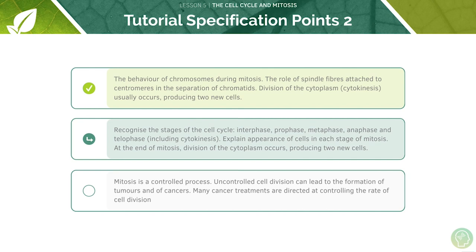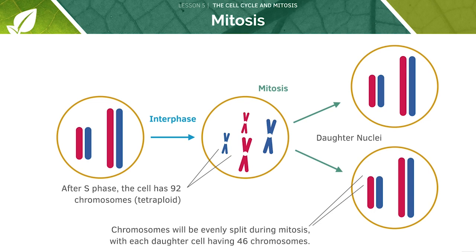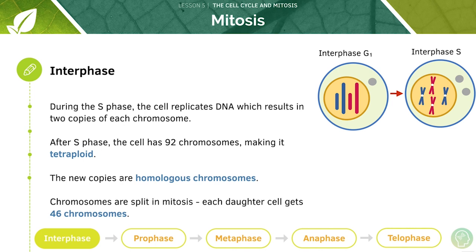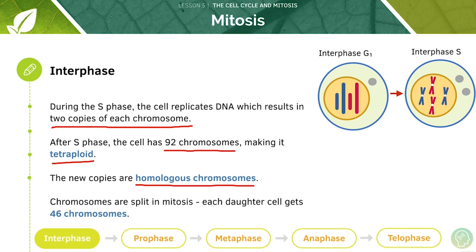Now we will cover the stages of the cell cycle. After interphase, the eukaryotic cell divides in mitosis to produce two daughter cells, each with identical copies of DNA produced by the parent cell during DNA replication. During S phase the cell replicates the DNA, resulting in two copies of each chromosome. After S phase the cell will have 92 chromosomes, making it tetraploid. The new copies are called homologous chromosomes. The chromosomes then split in mitosis, meaning each daughter cell gets 46 chromosomes.